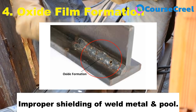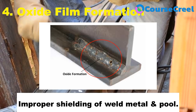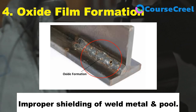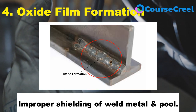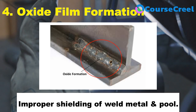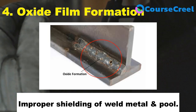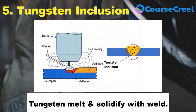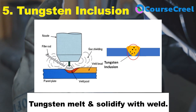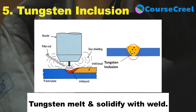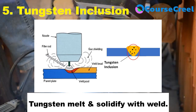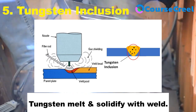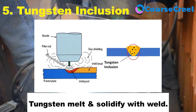The next defect is oxide film formation, which mainly happens because of improper shielding of the weld metal and weld pool. To avoid oxide film formation, we should provide proper shielding or protection to the weld metal and weld pool using shielding gases and flux. The next defect is tungsten inclusion, which mainly occurs where we use tungsten electrodes — the tungsten electrode melts and solidifies with the weld. This type of defect is not considered harmful unless the size and amount become excessive.